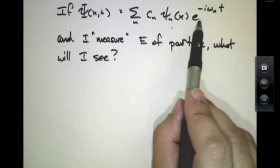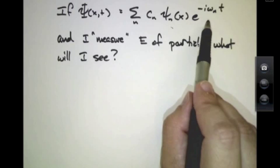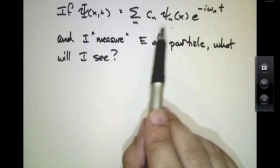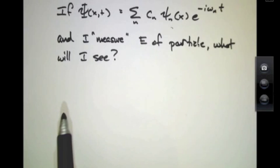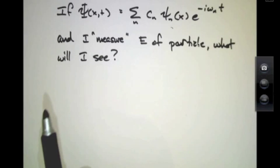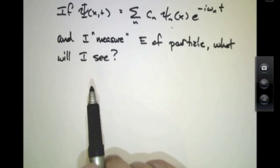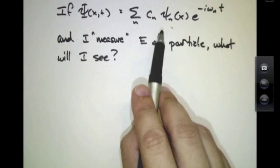Each of these things have a definite energy, omega n times h bar. And by saying that there's a superposition, we're saying that this particle is in a cocktail of possible states, and at any instant in time, I don't know which of those states the particle's in. I know that it has some probability of being in each of these things.